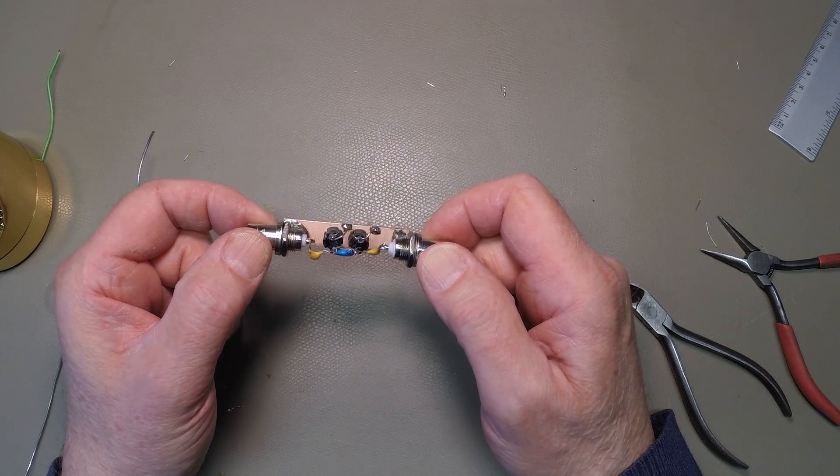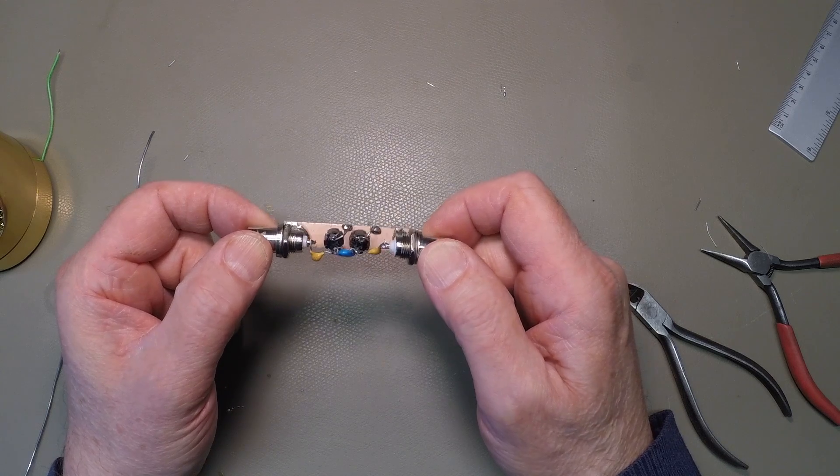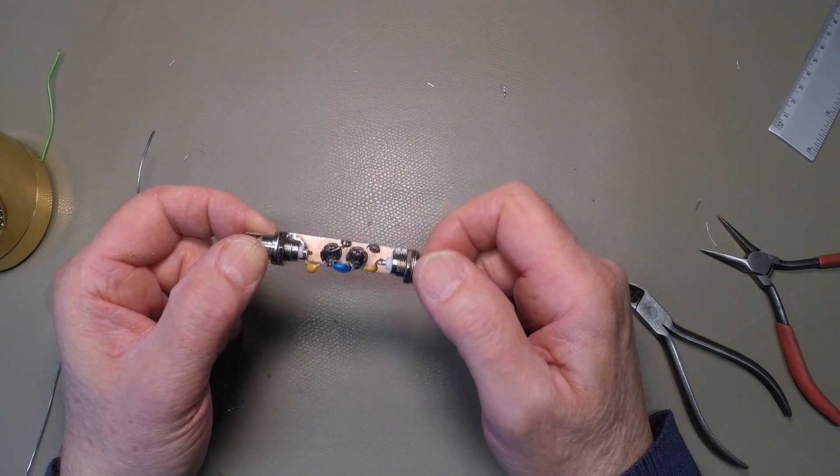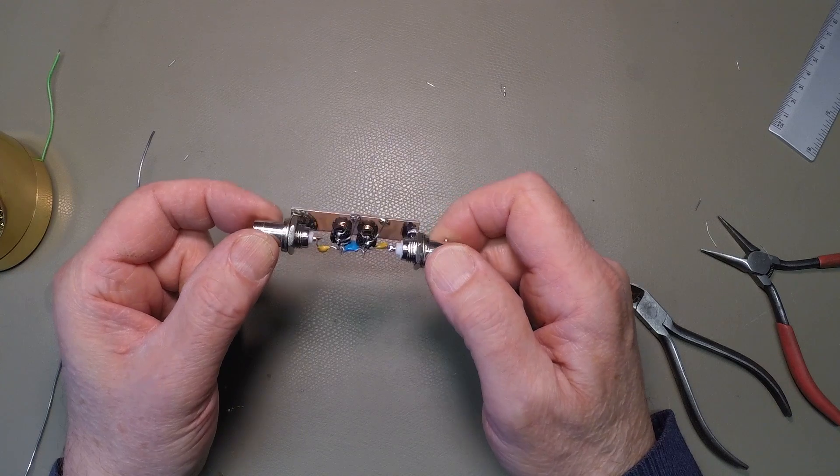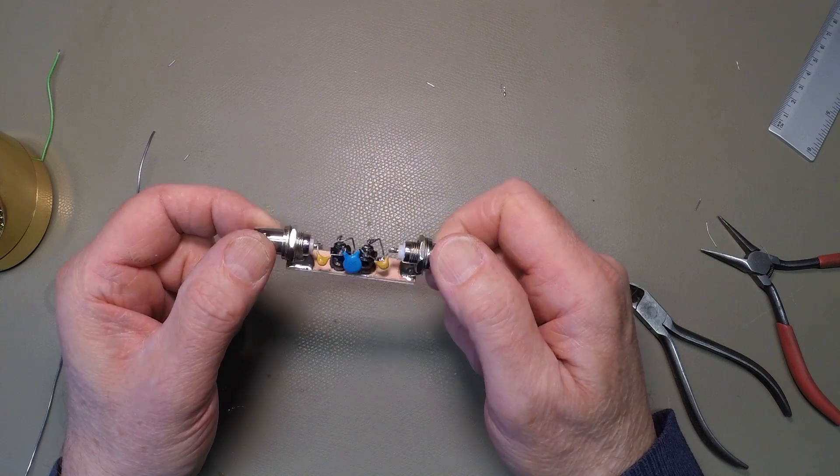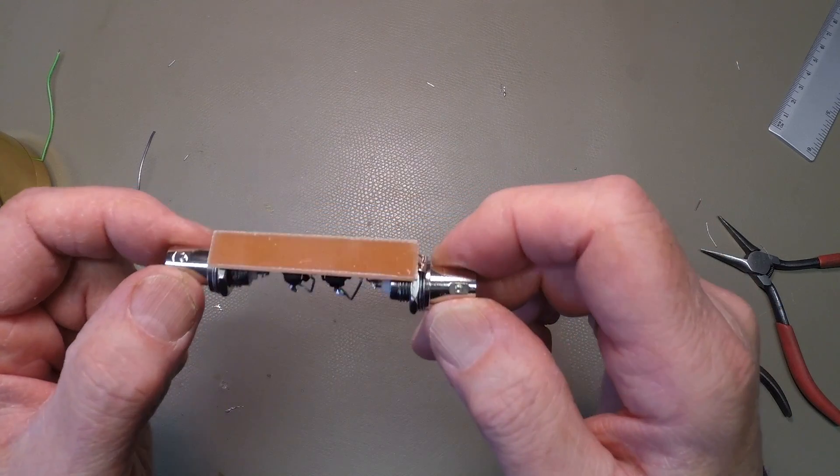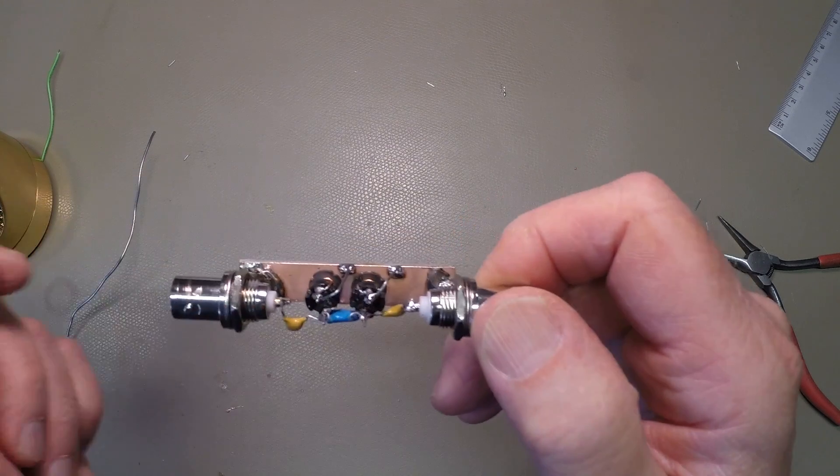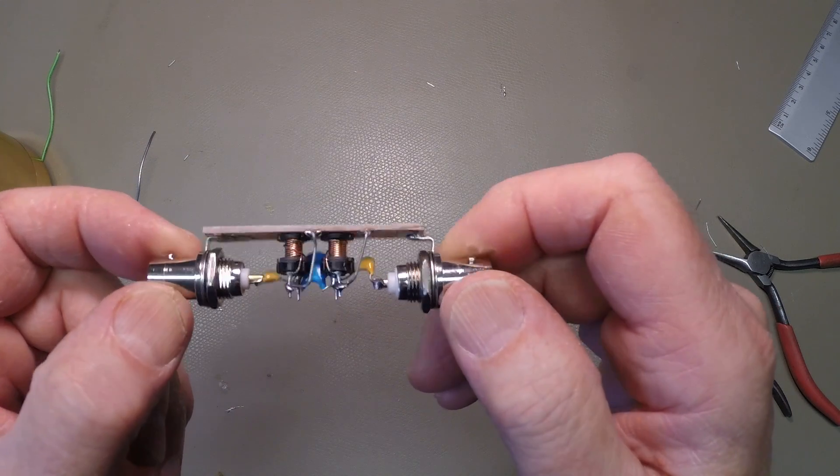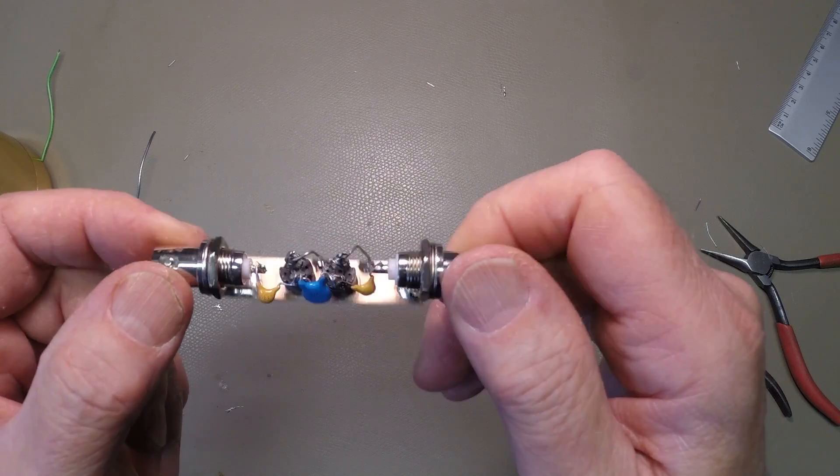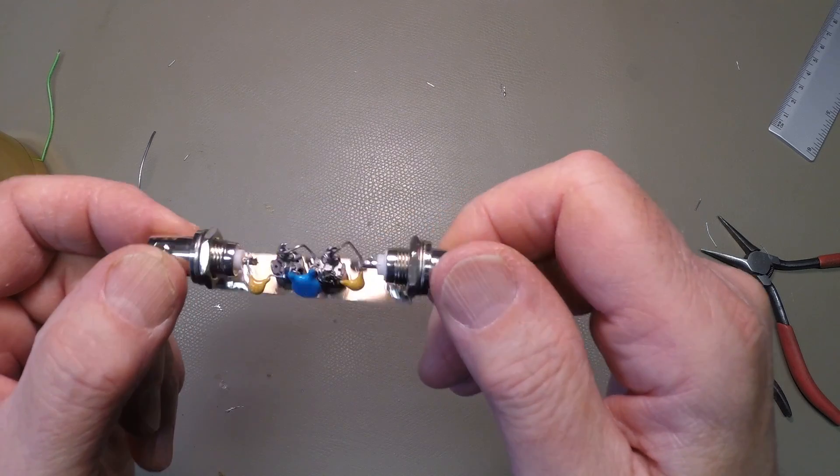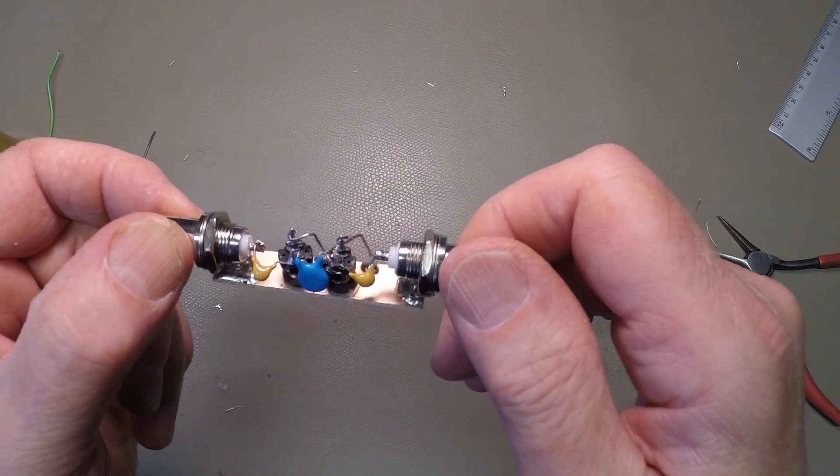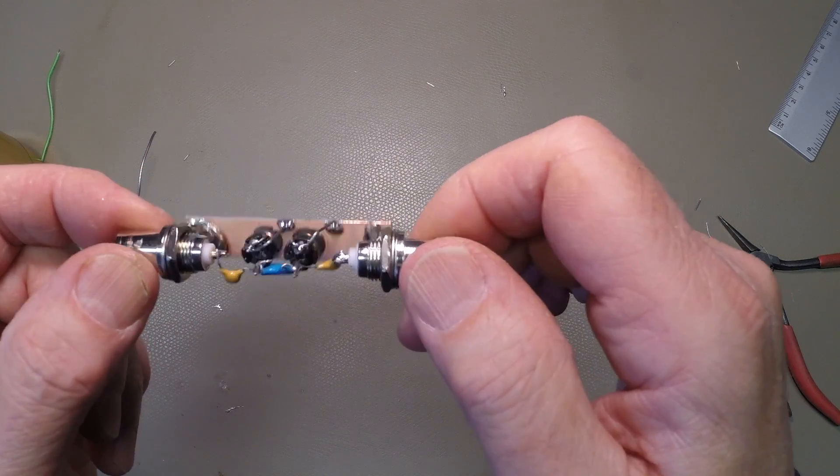For the input of the SDR this enables it to cover much more frequency range but the downside is if you've got very strong medium wave stations not far from you the tendency is for those things to overpower the frequencies that you're trying to listen to. So what this does, this is called a high pass filter, this essentially